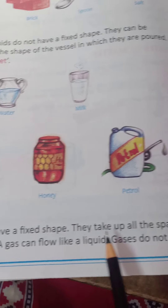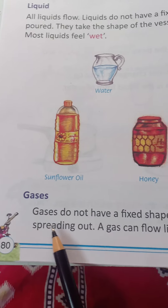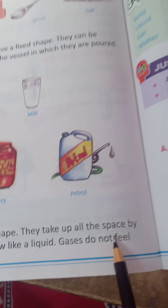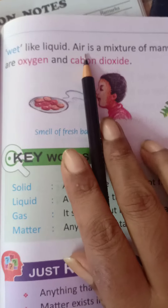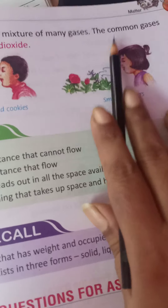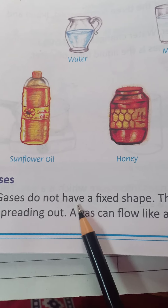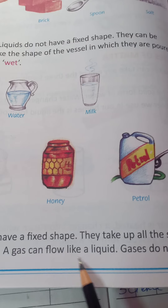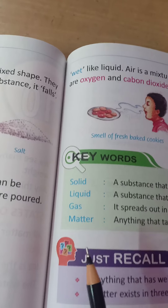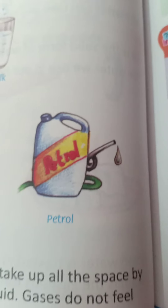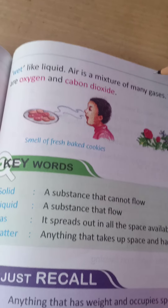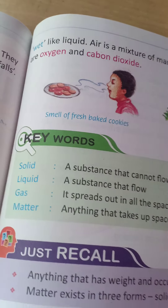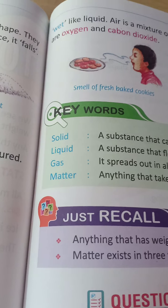Gases do not have a fixed shape; they take up all the space by spreading out. A gas can flow like a liquid, but gases do not feel wet like a liquid. Air is a mixture of many gases; the common gases are oxygen and carbon dioxide. Gas does not have a fixed shape — it just spreads and takes up all the space.